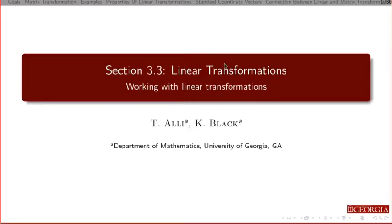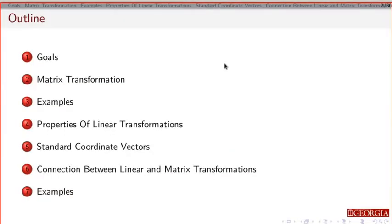We're going to take a look at section 3.3. We'll be looking at linear transformations — we're going to extend and generalize the idea of matrix multiplication. First I'll look at some of our goals and expectations: go back and look at matrix transformation again, look at some examples, and then generalize this into something we're going to call a linear transformation. In terms of the main result, we're going to need something called a standard coordinate vector, which we'll define, and then we'll draw the connection between linear and matrix transformations, and finally do a couple examples.